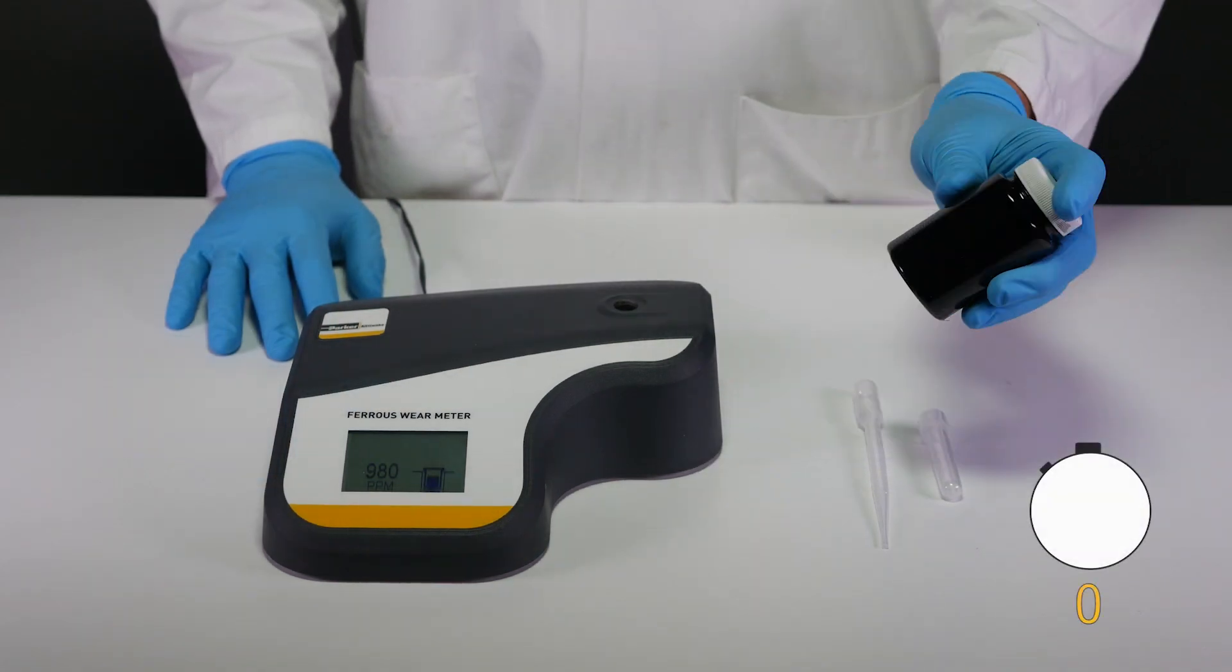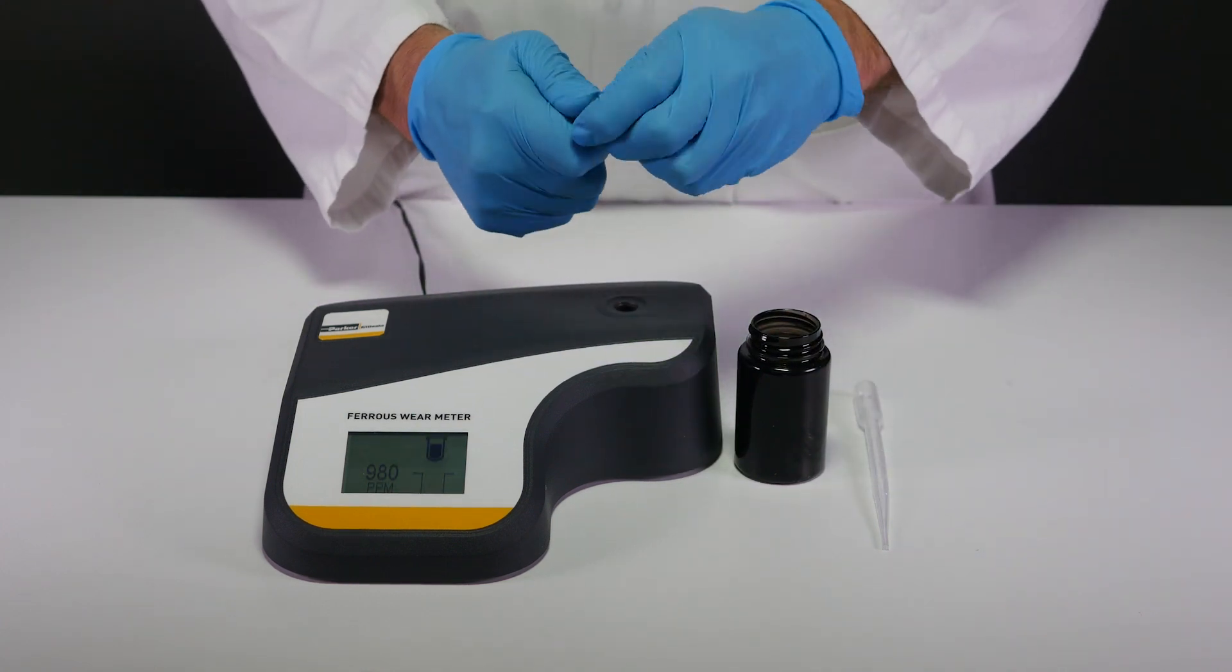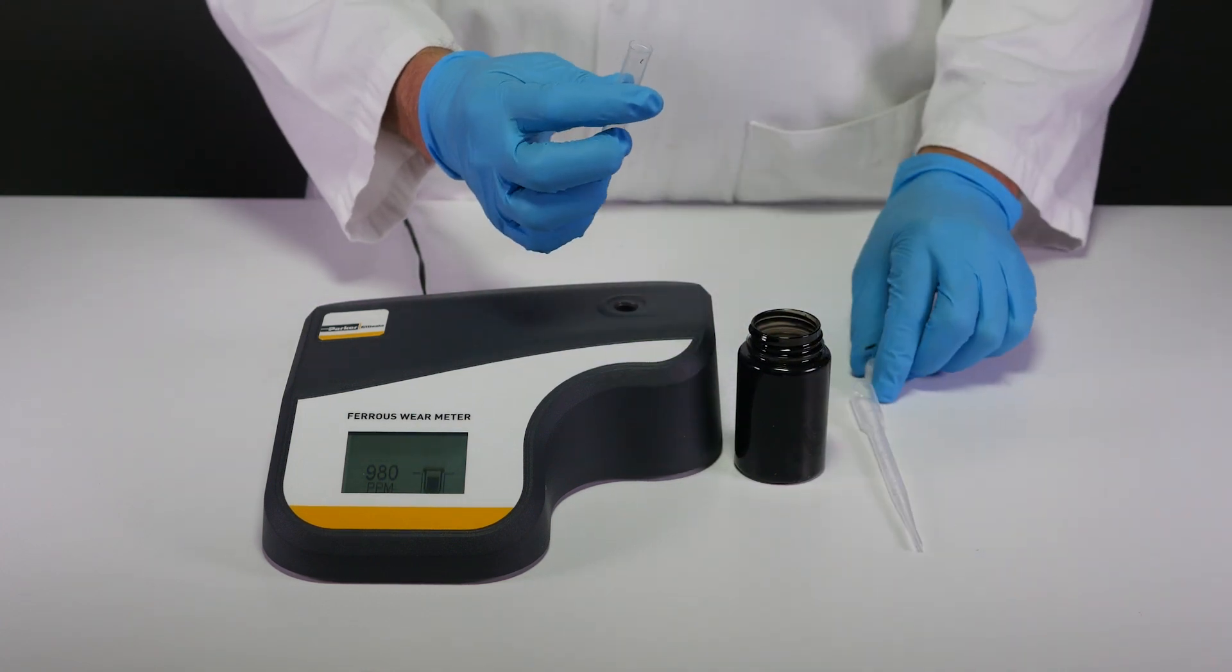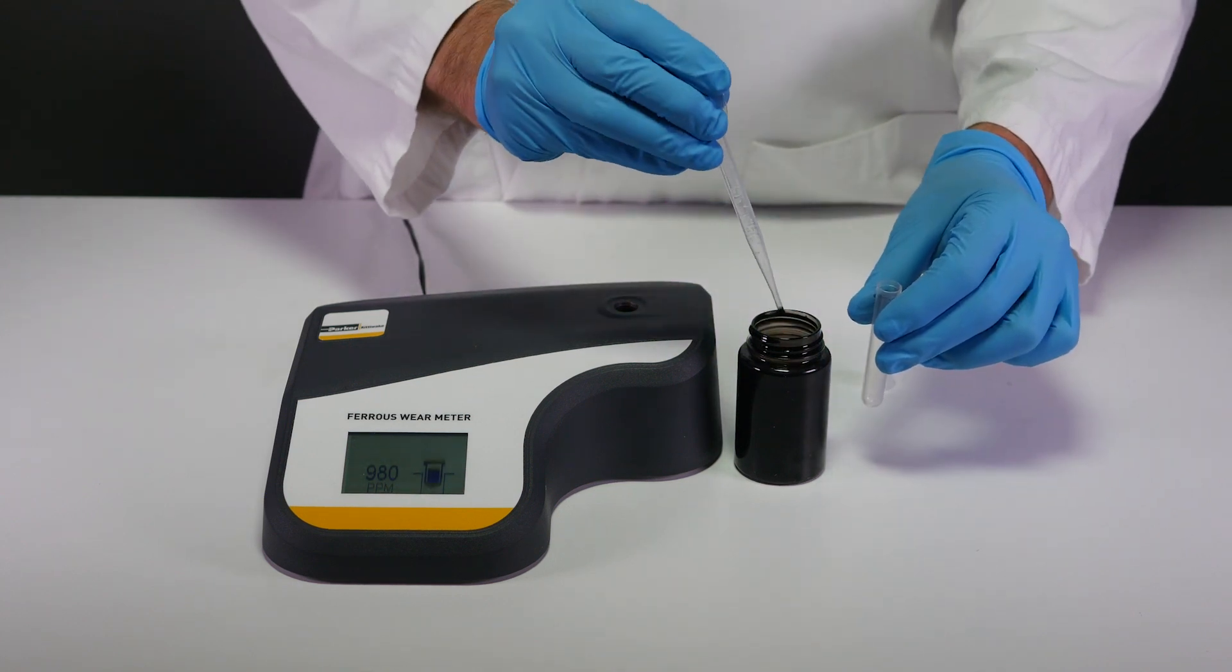Begin by agitating your oil sample for approximately 30 seconds. Fill a five milliliter test tube to within five millimeters of the top with your oil sample. For each test, use a new test tube.